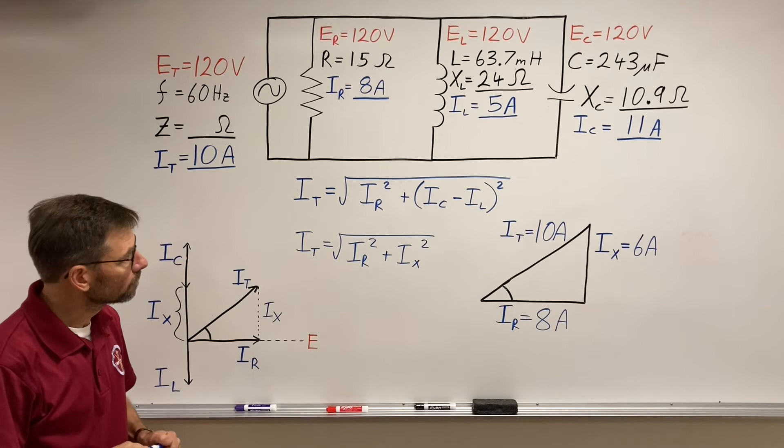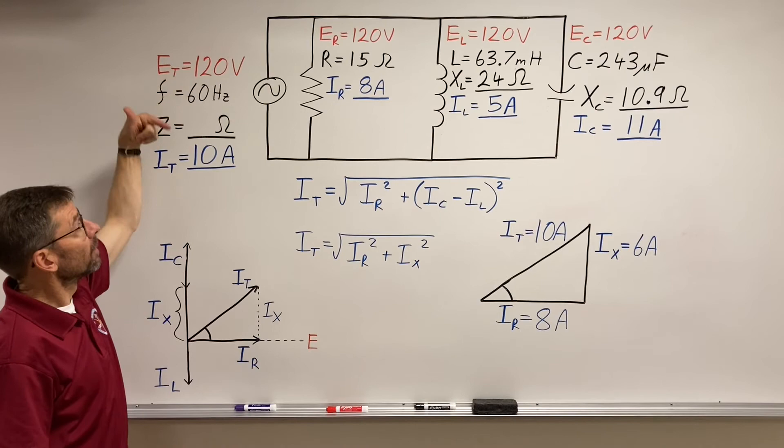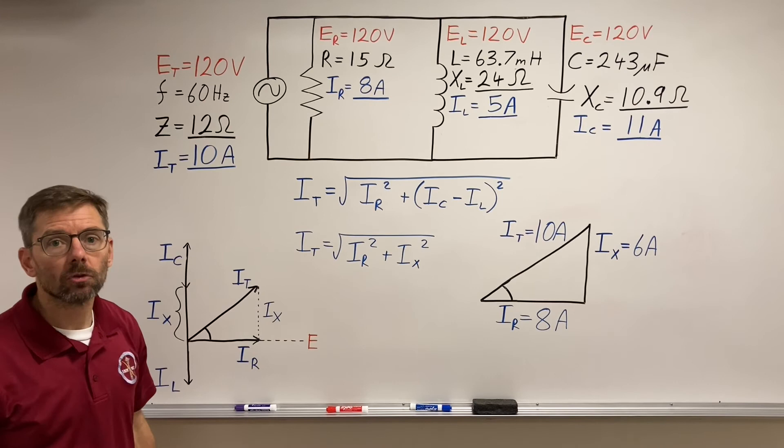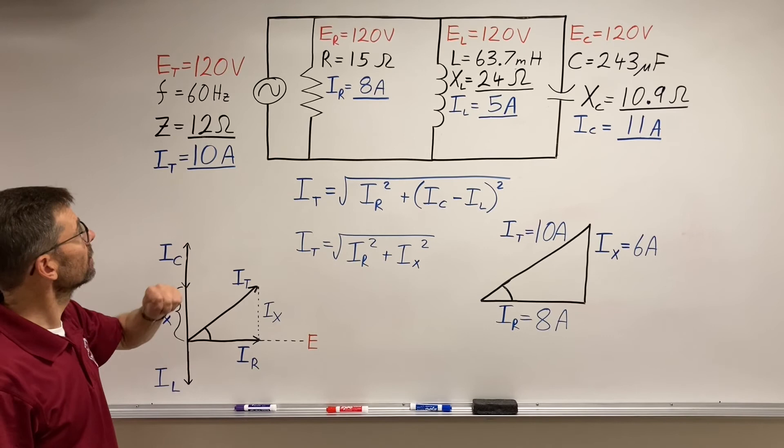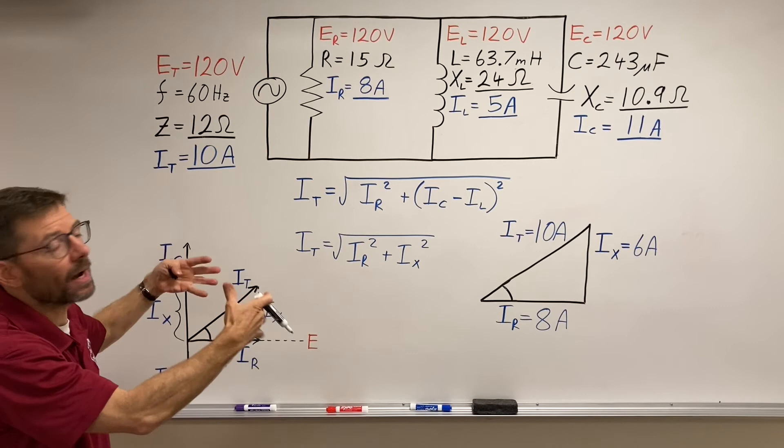Now I can use my 10 amps. 120 volts divided by 10 amps gives me 12 ohms. And there we have it. Current and impedance done by finding impedance by finding my total current and then using Ohm's law.